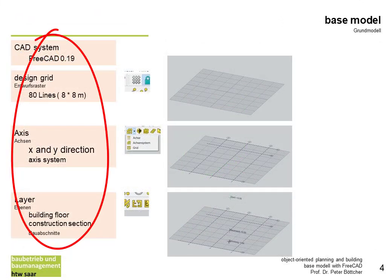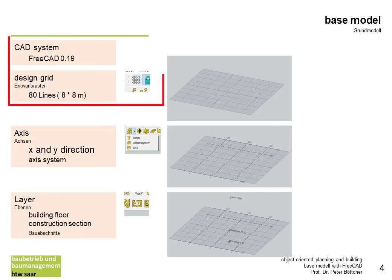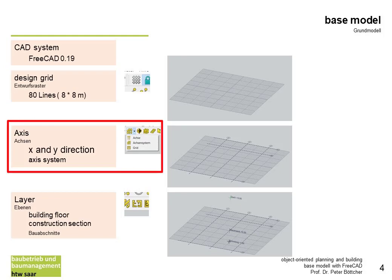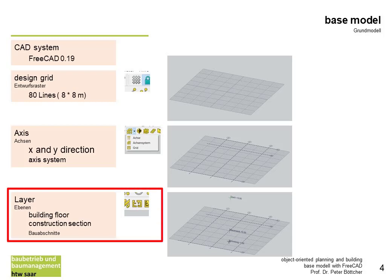To build the base model I have to do three steps. In the first step I have to do the settings of the draft grid. In the second step I have to draw the axis, which I already had drawn on paper. In the third step I have to model the layers for the building floors and the construction sections.